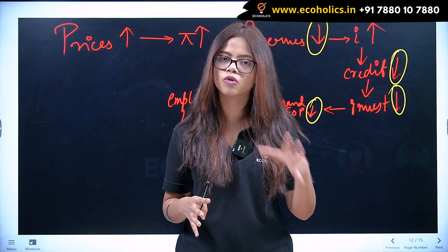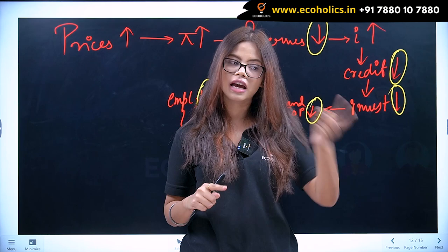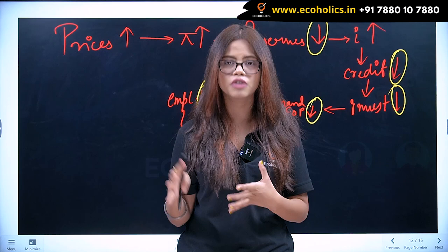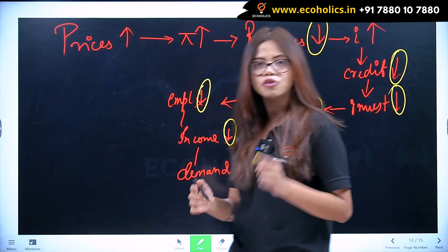But when we talk about general fluctuations, at that point of time, floods, famines, and wars only partially affect the business cycle. It is the monetary phenomenon — the flow of money — which is the thing that basically governs the fluctuations.